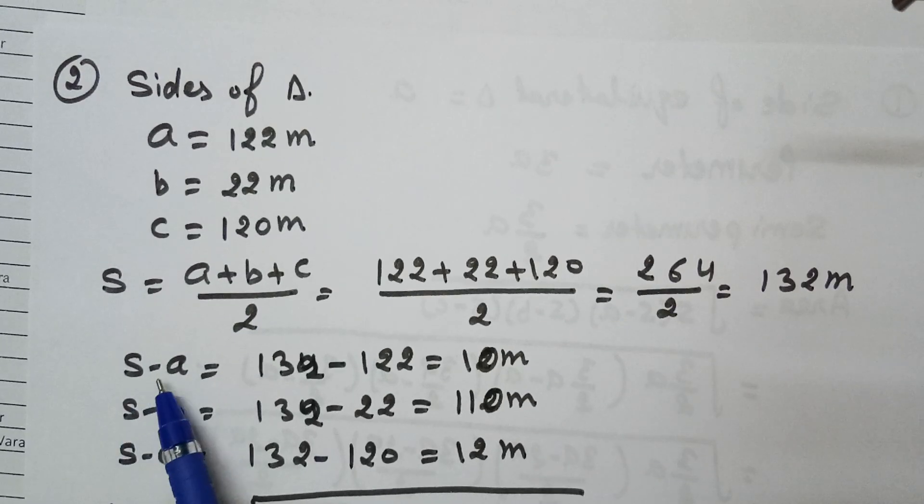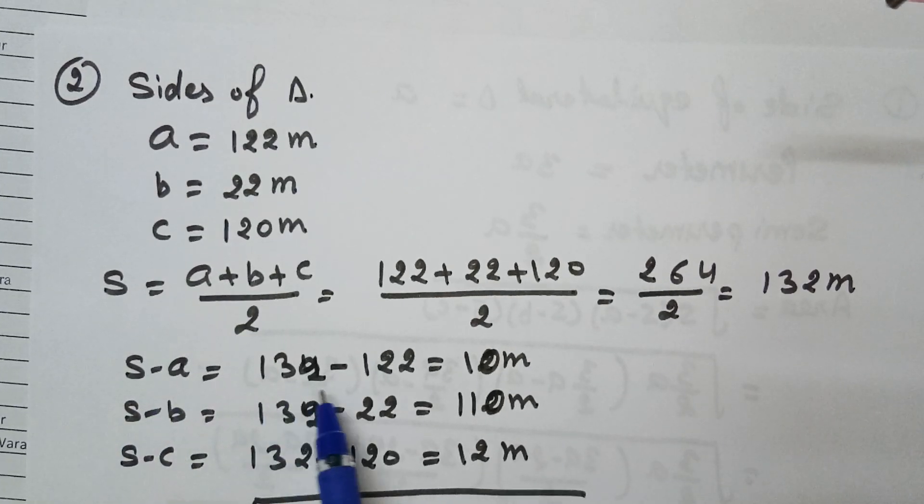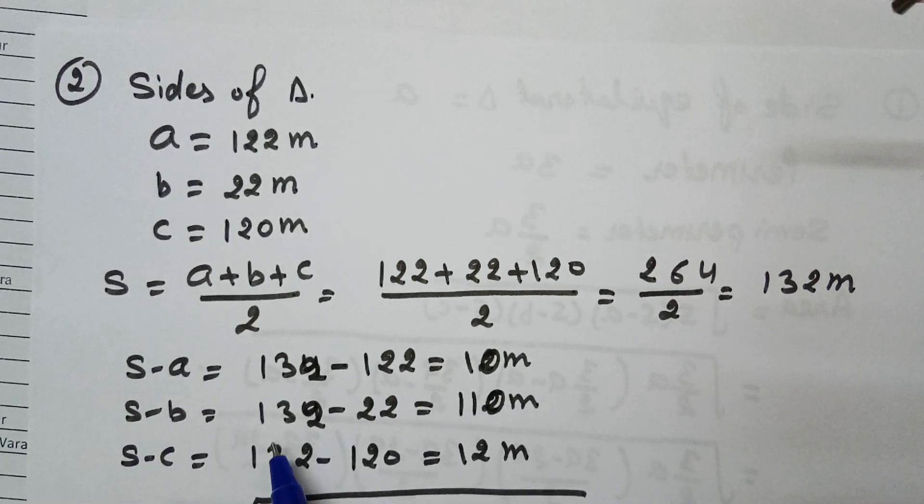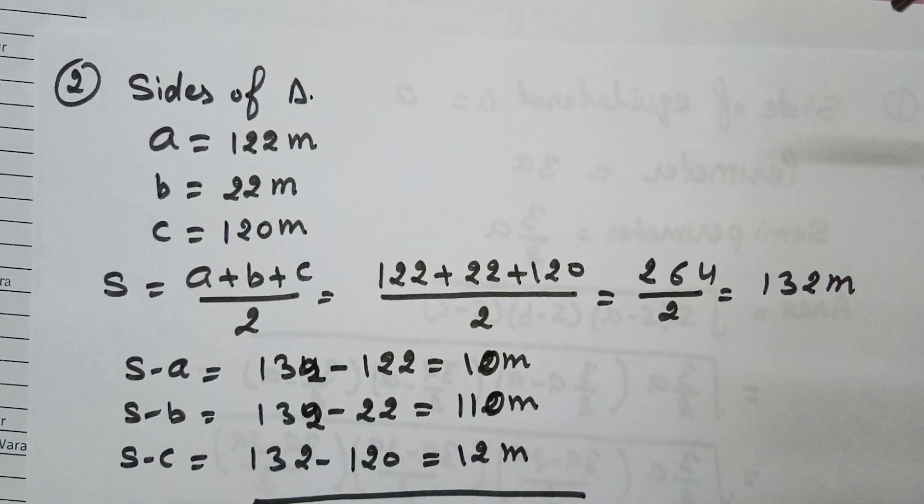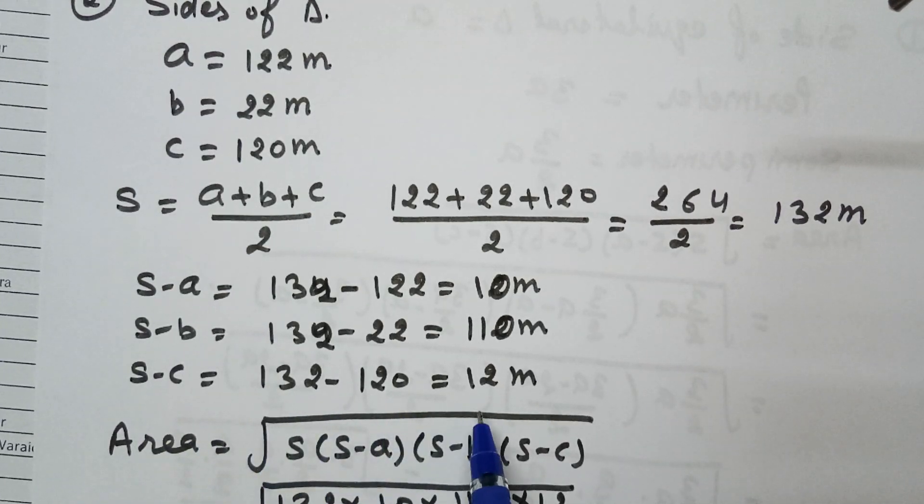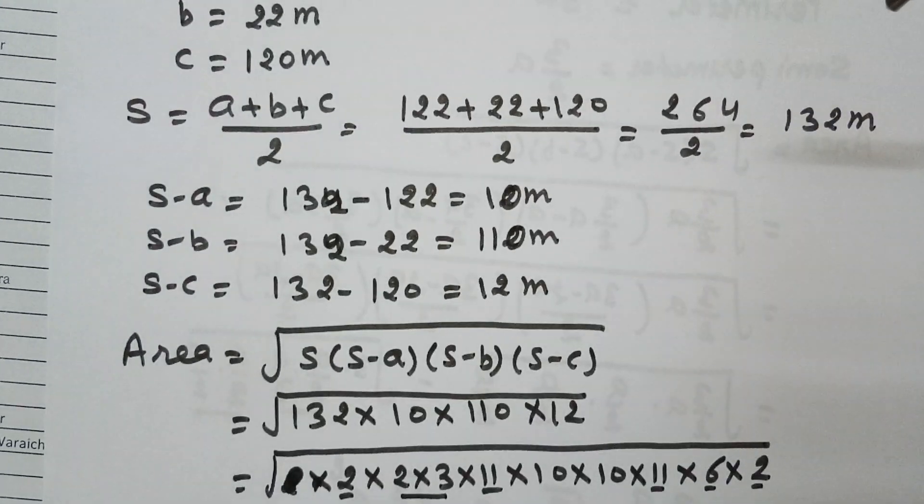Now S - a equals 132 - 122 equals 10 meters. S - b equals 132 - 22 equals 110 meters. And S - c equals 132 - 120 equals 12 meters.